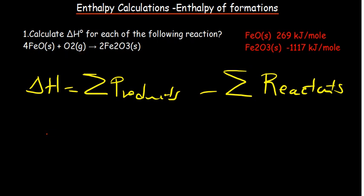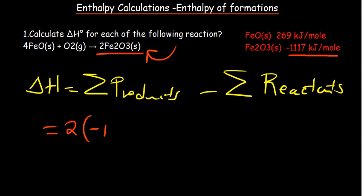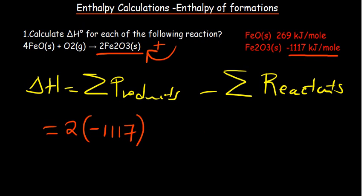Let's get to the calculations. For our products, we have the enthalpy of formation value that has been given — it is negative, given in kilojoules per mole. The equation tells us we have two moles of the iron(III) oxide. So we take two and multiply it by the given enthalpy of formation. Note that here, unlike bond enthalpies where we count bonds, we are calculating the number of moles. We don't have any other products, so we end there.